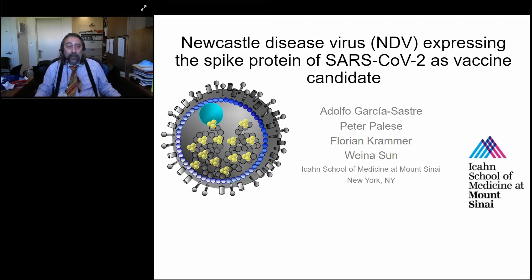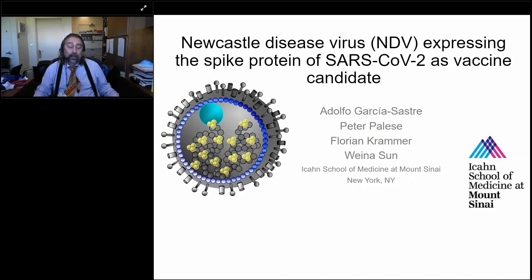The vaccination strategy we are using employs a viral vector. Viral vector vaccines have been made for SARS-CoV-2 — the widely used ones are the adenovirus vaccines: Johnson & Johnson, AstraZeneca, Sputnik, and some Chinese vaccines. The vector we are using is not an adenovirus but Newcastle disease virus, which is an RNA virus, as opposed to adenoviruses which have a DNA genome. Newcastle disease virus is an avian virus that infects and causes problems in chickens.